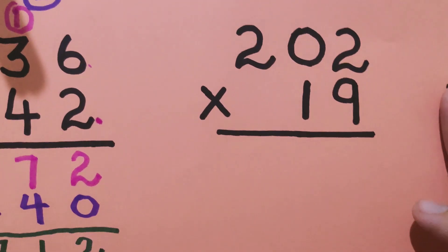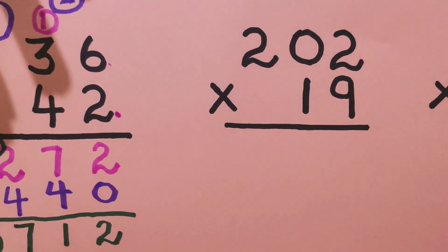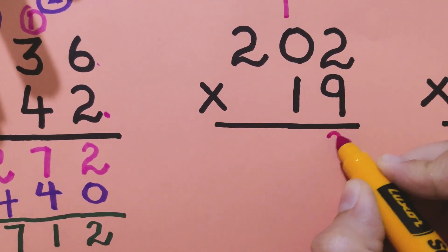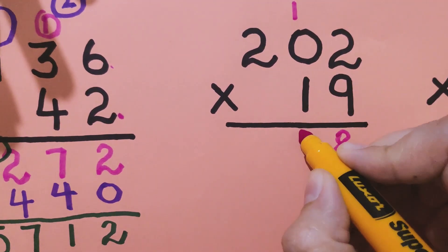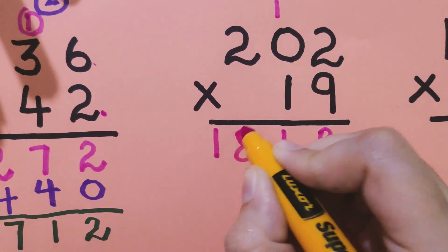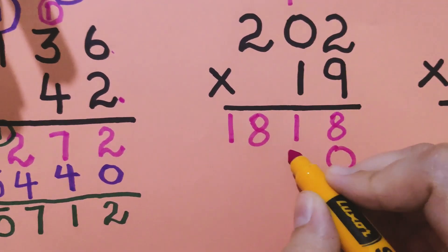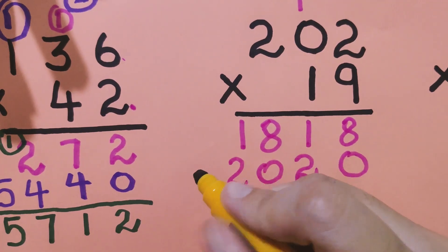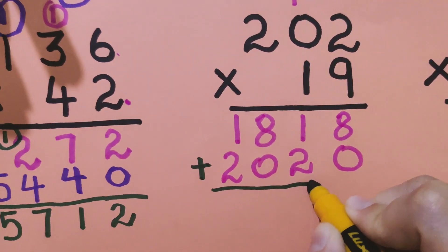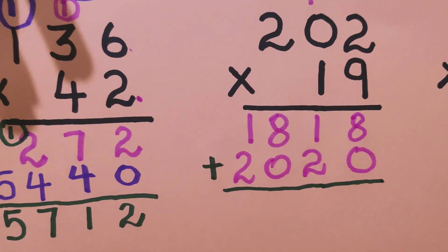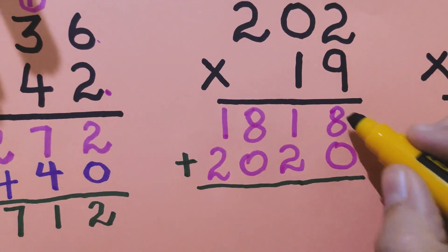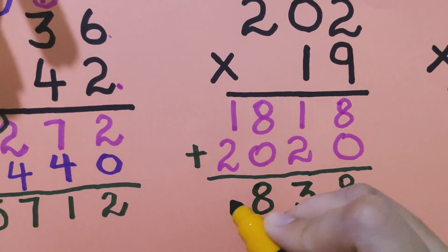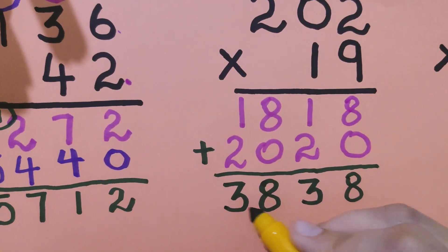Let's move to another question quickly. First step: multiply with 9. 9 times 2 is 18, 9 times 0 is 0 plus 1 is 1, 9 times 2 is 18. Second step: put 0. Third step: multiply with 1. 1 times 2 is 2, 1 times 0 is 0, 1 times 2 is 2. Then addition: 8 plus 0 is 8, 1 plus 2 is 3, 8 plus 0 is 8, 2 plus 1 is 3. So the answer is 3838.